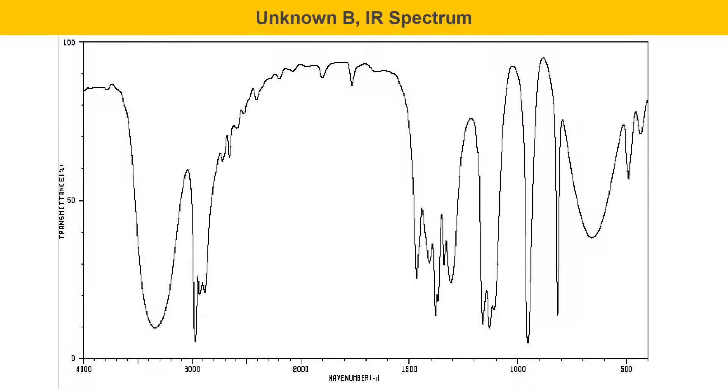The IR spectrum for unknown B is shown here. The important thing for this one is to remember that you're only working on the functional group region of the molecule, and you can just ignore this fingerprint region, which contains a lot of complicated peaks that are difficult to interpret. You just want to get the major peaks in the functional group region, that region between 1,500 and 4,000 wave numbers.